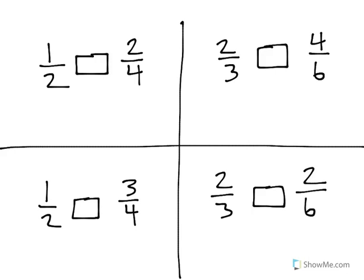Let's start at the top here, 1 half and 2 fourths. What I'm going to do is represent both of those with a circle. First, I'll represent 1 half. I'm going to do that by breaking the circle into two equal pieces and shading in one of them.